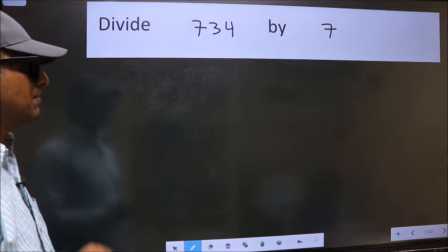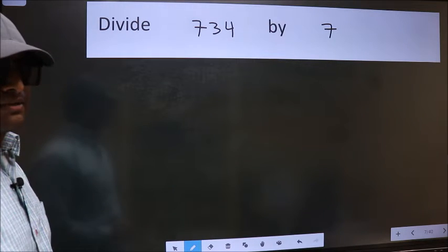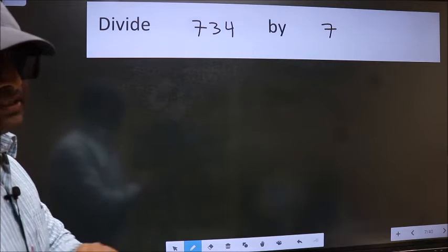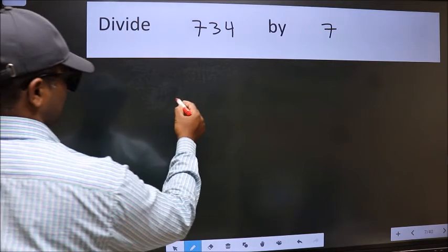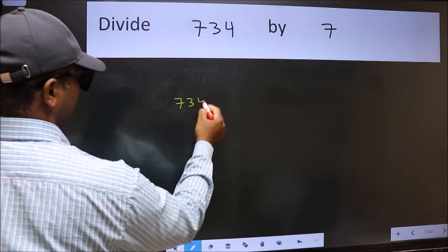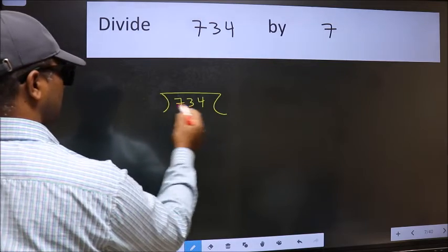Divide 734 by 7. To do this division, we should frame it in this way: 734 here and 7 here.